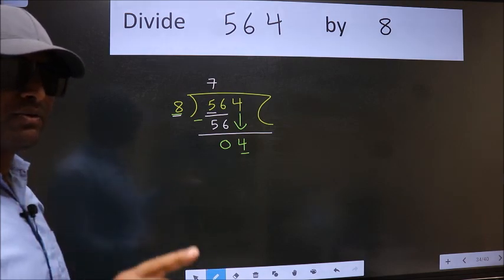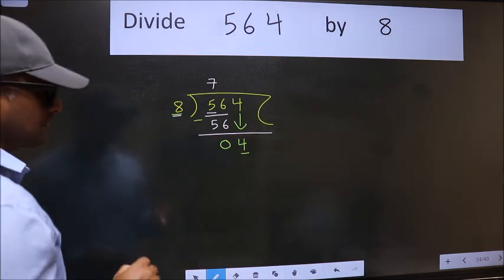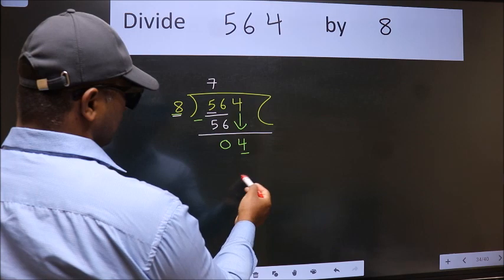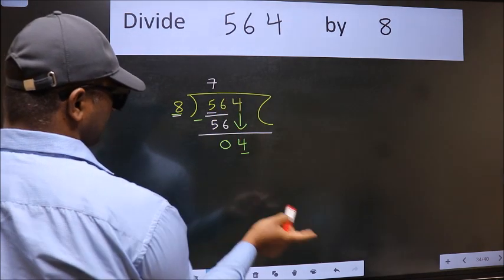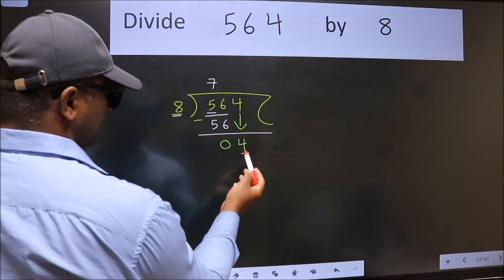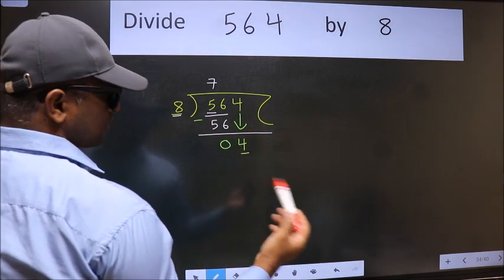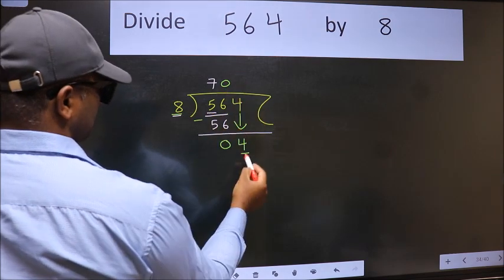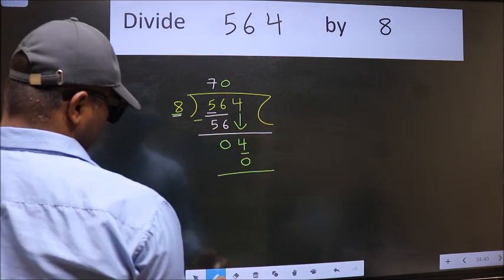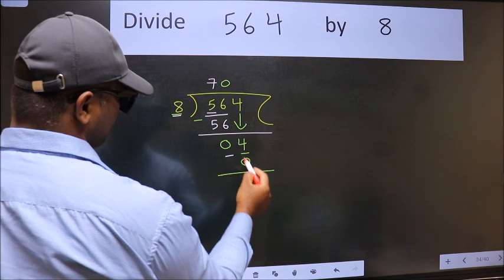Instead of that, what we should think of doing is which number should we take here. If I take 1, we will get 8. But 8 is larger than 4. So what we do is we take 0. So 8 into 0 is 0. Now we subtract. We get 4.